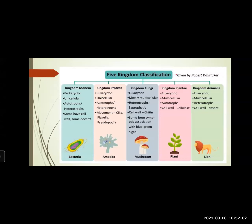Now let us see the characteristics of each kingdom. First, kingdom Monera. These are organisms which are prokaryotic. They are unicellular. However, they may be autotrophs or heterotrophs. Some have cell wall, some don't. Bacteria are included in kingdom Monera.